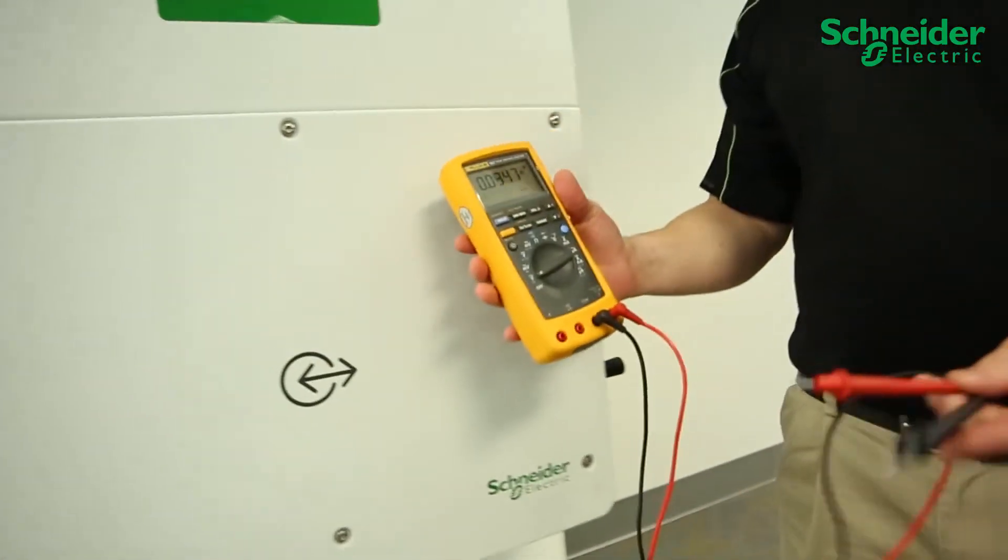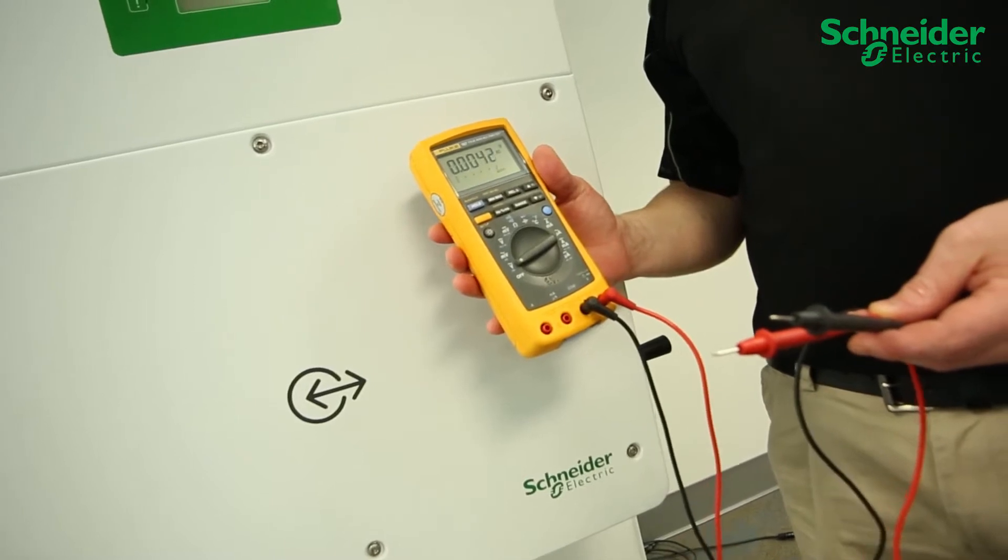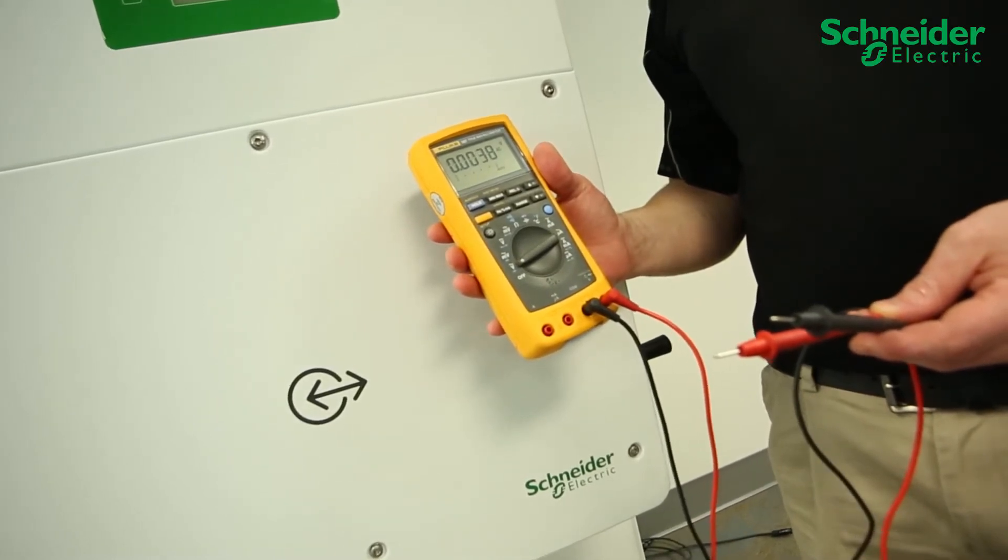Measure for the absence of voltage using the appropriate PPE equipment and minimally rated 1000 volts DC, 400 volts AC meter.